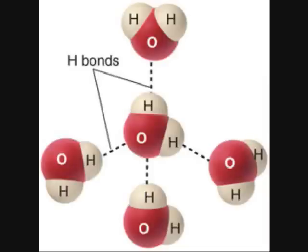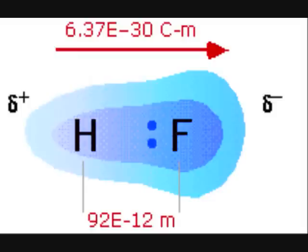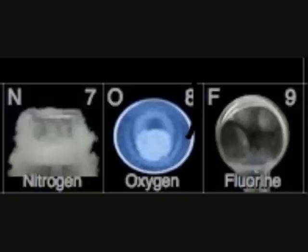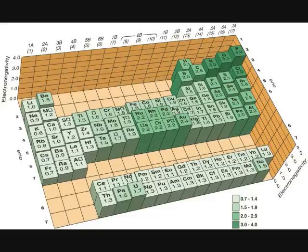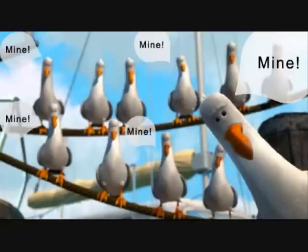Hydrogen bonding occurs in polar molecules, but only in the special case where a hydrogen is bonded to a nitrogen, an oxygen, or a fluorine. This creates really polar molecules because the electronegativities of nitrogen, oxygen, and fluorine are so high that they just really want to steal their electrons.